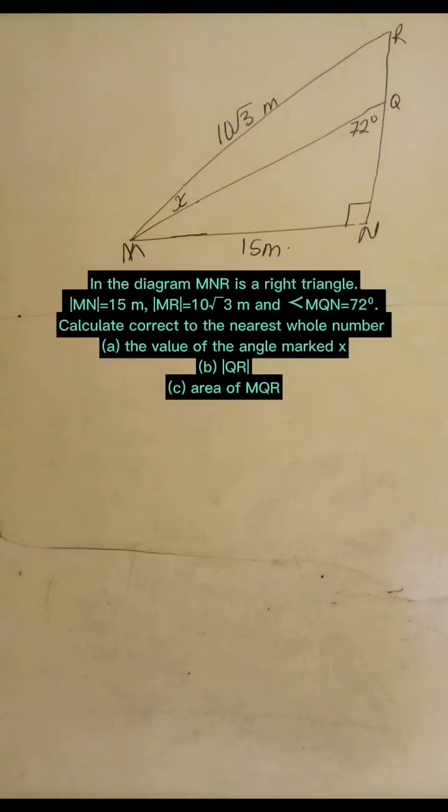In the diagram, MNR is a right triangle, MN equals 15 meters, MR equals 10 root 3 meters, and angle MQN equals 72 degrees.